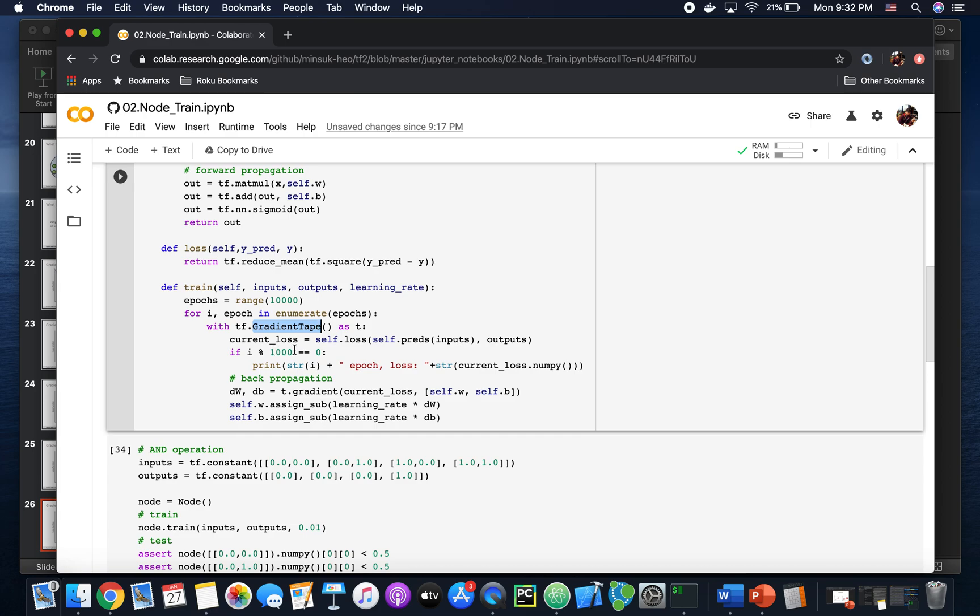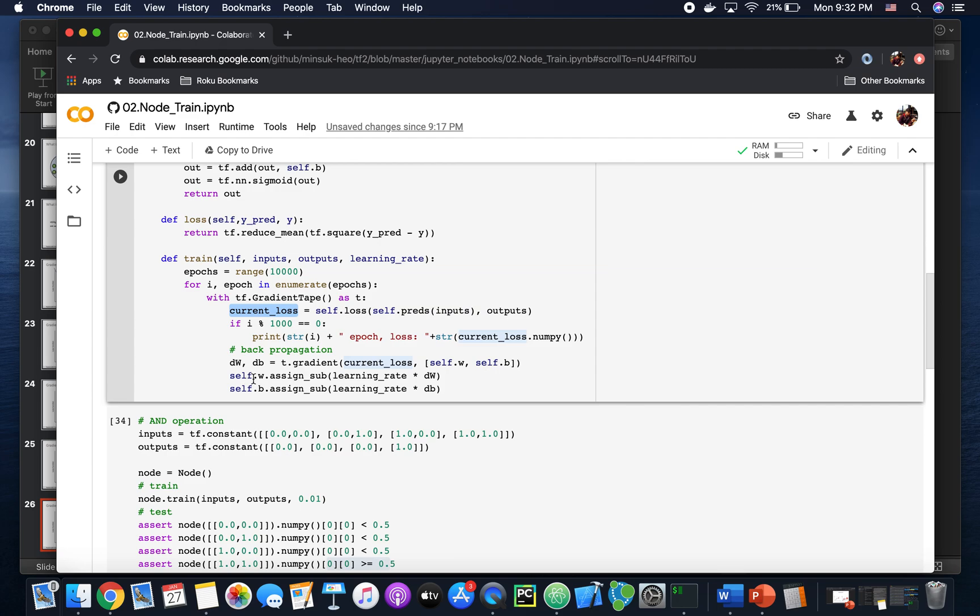Using the tf.GradientTape, I get the loss function. And after the gradient descent, I just assign to the new weight value and the new bias value.